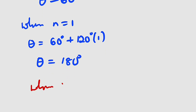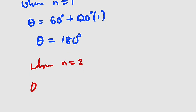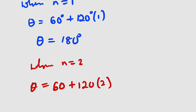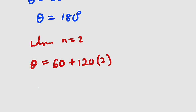When n equals 2: theta equals 60 degrees plus 120 times 2. 120 times 2 is 240, plus 60 is 300. So theta equals 300 degrees.